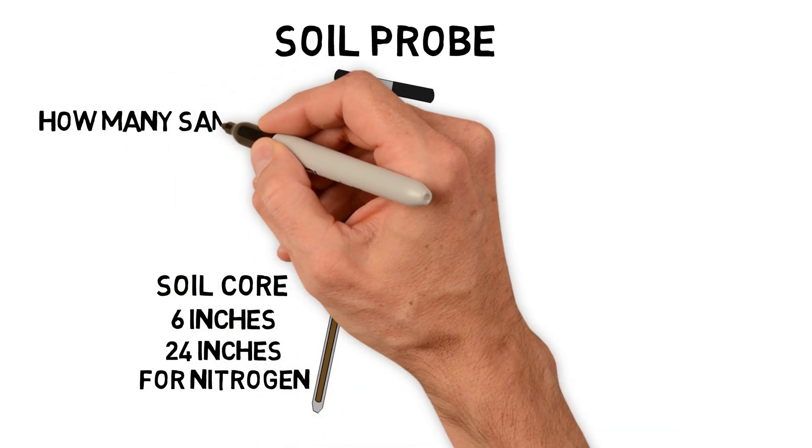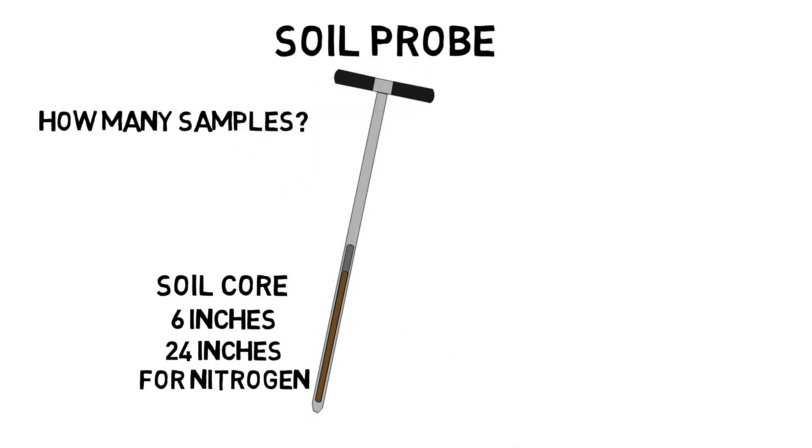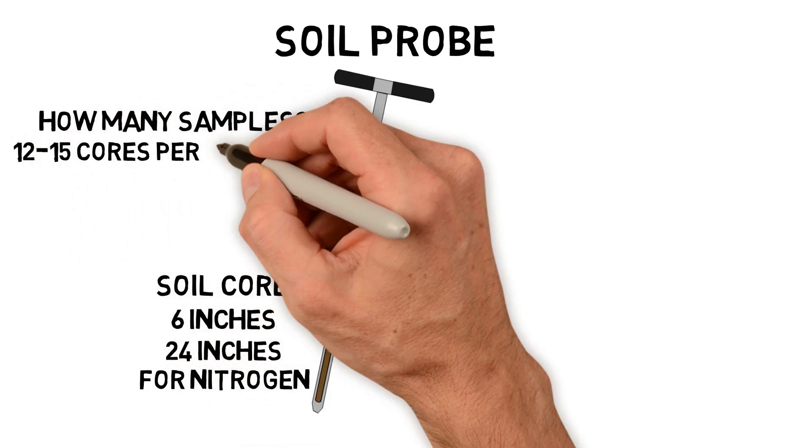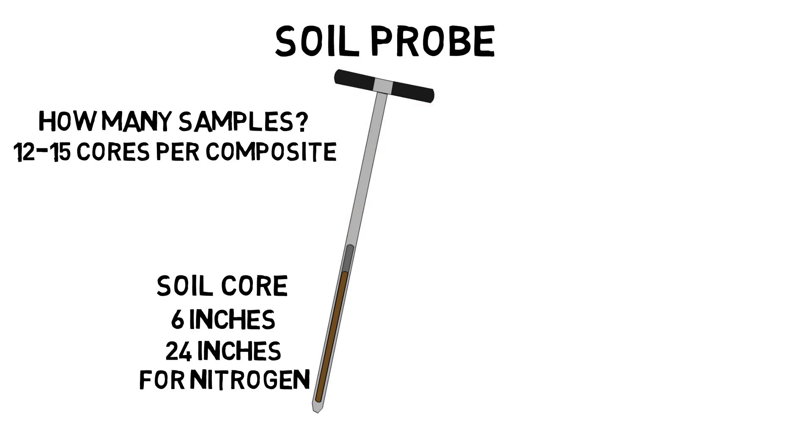So how many samples do you need to take? This is a function of statistics, because the more samples that you take, the better that your samples will represent an average of the field. Usually, it's recommended that you take about 12 to 15 cores and mix these together in a bucket to make what's called a composite sample.